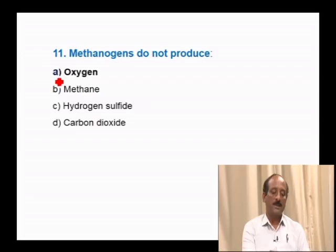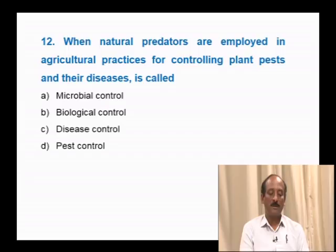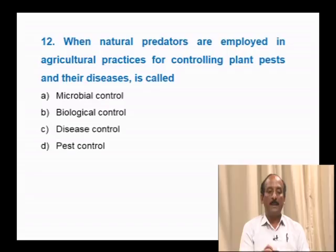Question number 12: When natural predators are employed in agricultural practices for controlling plant pests and diseases, it is called — microbial control, biological control, disease control, pest control. The controlling of diseases by using other living agents is called biological control. The correct answer is option B.